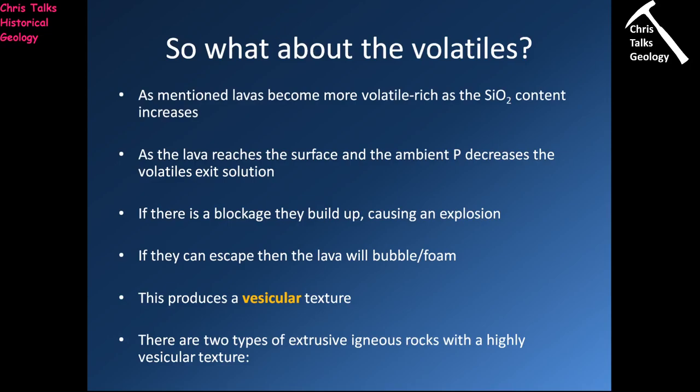As mentioned earlier, as you go from ultramafic to felsic, the amount of volatiles in your magma increases. These increased volatiles lead to more explosive eruptions. Felsic and intermediate magmas are commonly associated with both lava-flow rocks and volcanoclastic rocks from explosive eruptions. In contrast, mafic and ultramafic magmas are not commonly associated with explosive eruptions, so you don't really get many pyroclastic rocks forming — the vast majority of igneous rocks from those magmas are formed from lava flows.